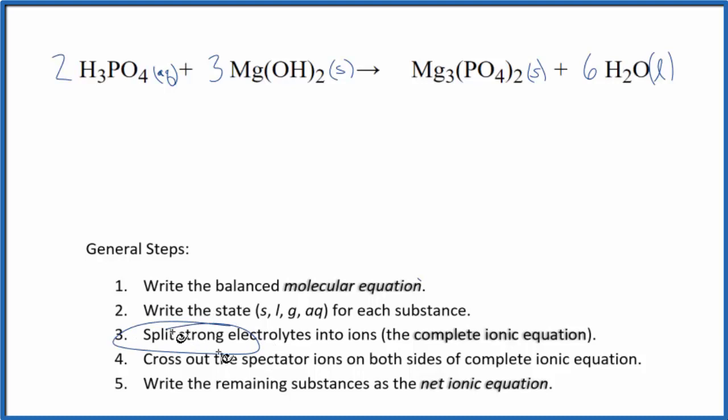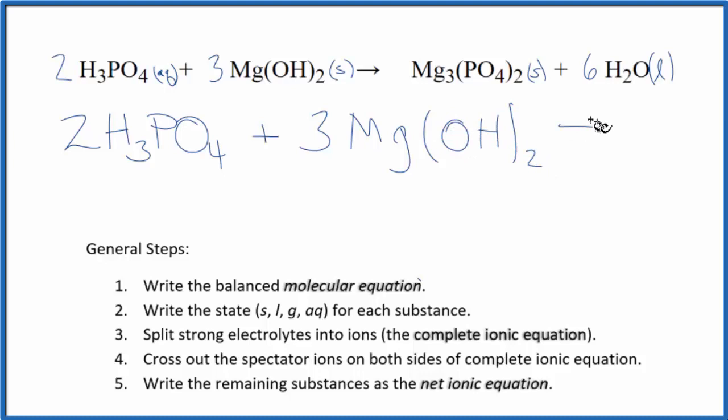Now, we can split the strong electrolytes into their ions to write the complete ionic equation, sometimes called the total ionic equation. When we look at this, this is a weak acid. Good to remember that phosphoric acid is a weak acid. It won't dissociate. So, we're just going to write 2H3PO4. We'll write the states at the end. Magnesium hydroxide is a solid. We don't split solids apart into their ions. So, three, just keep it together. Magnesium hydroxide, those are the reactants.